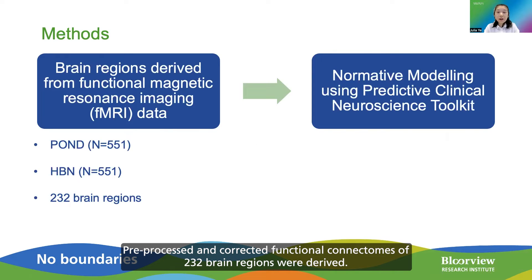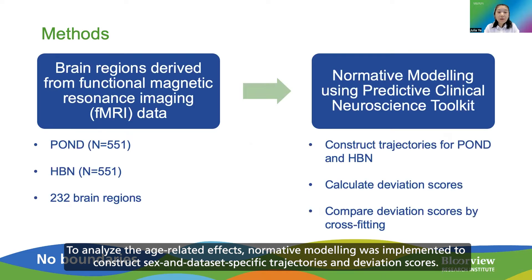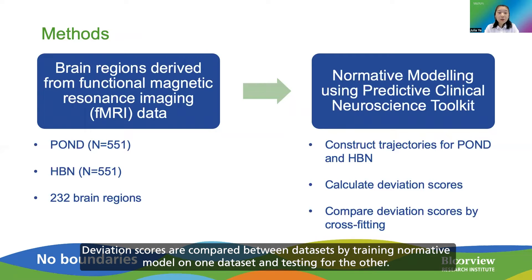Pre-processed and corrected functional connectomes of 232 brain regions were derived. To analyze the age-related effects, normative modeling was implemented to construct sex and data set specific trajectories and deviation scores. Deviation scores are then compared between data sets by training the normative model on one data set and testing on the other.